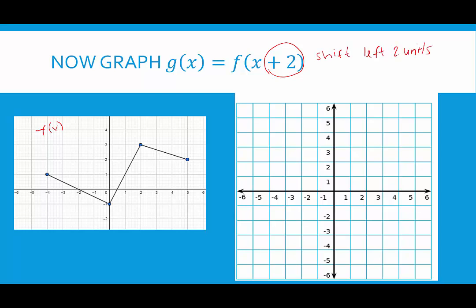The way that I kind of justify why this makes sense, like why do we move left when it's a positive, is because now x has to work that much harder to get back to where it started. So in this case, because it's plus 2, it's going to move this 2 units to the left.